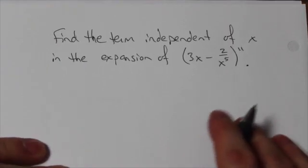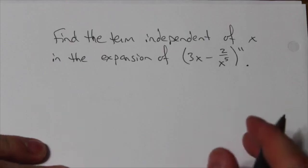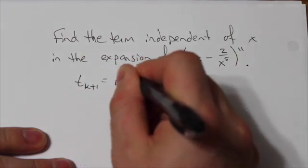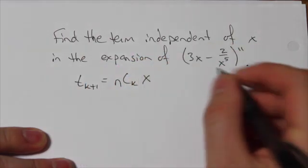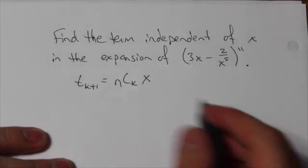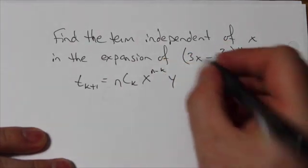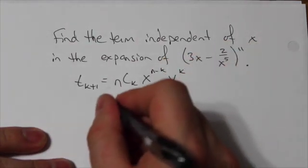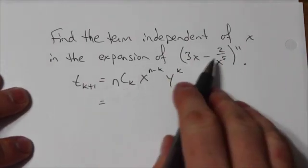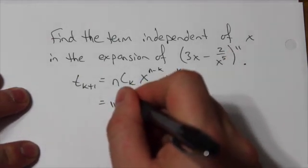I'm going to apply the general term of the binomial expansion equation here, which is t_{k+1} = nCk * x^(n-k) * y^k. Not to be confused with the x variable you're seeing here - this x refers to the first term, and y refers to the second term. I do know that the exponent here is going to be my n, so n is going to be 11. So 11 choose k.